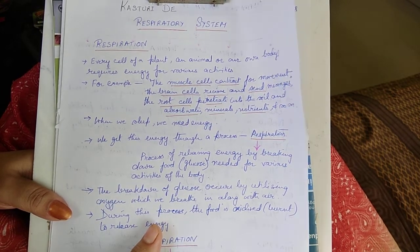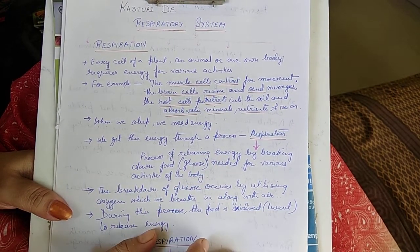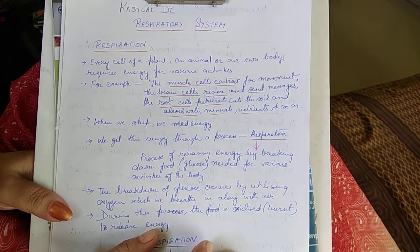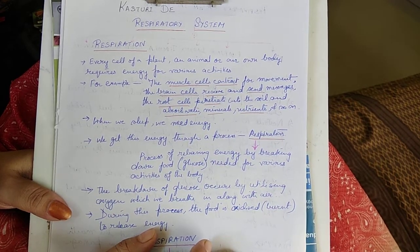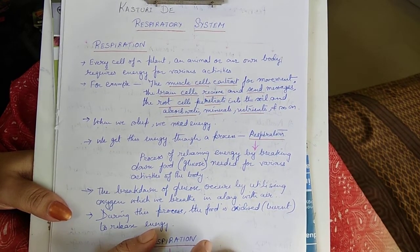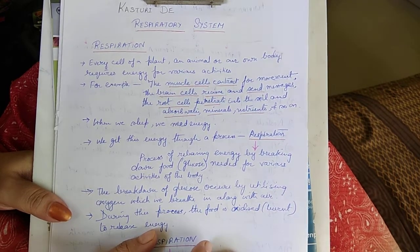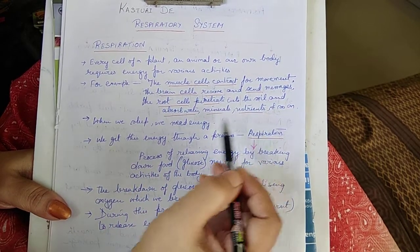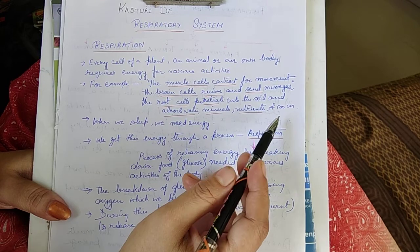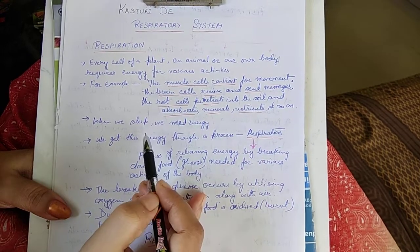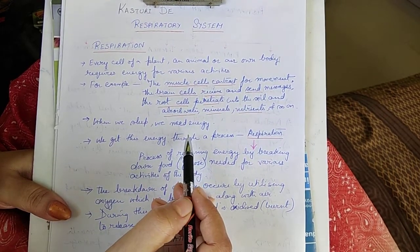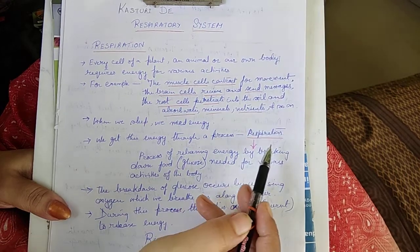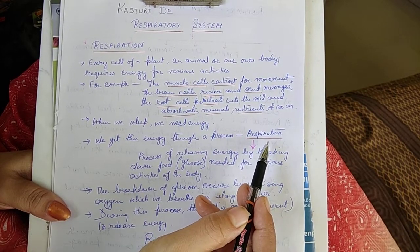Every cell of a plant, an animal, or our own body requires energy for various activities. For example, the muscle cells contract for movement, the brain cells receive and send messages, the root cells penetrate into the soil and absorb water, minerals, and nutrients. Even when we sleep, we need energy. For all these activities, we get energy through a process known as respiration.